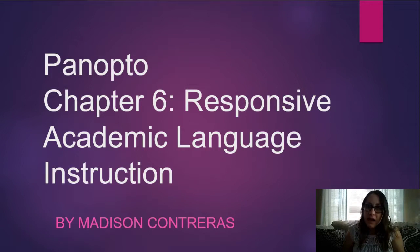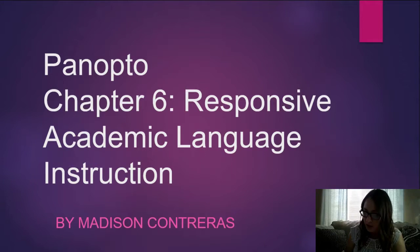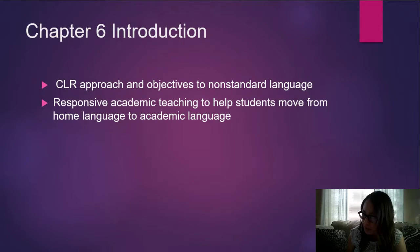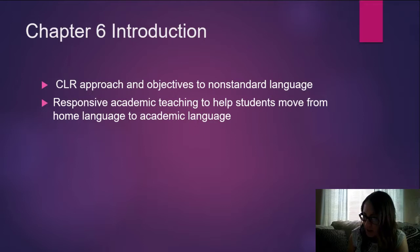Hey everyone, it's Madison from your diversity class. For my Panopto, I'm doing chapter six. The title of chapter six is Responsive Academic Language Instruction, and this chapter is found in our book on pages 113 through 135. The main takeaway from this chapter is following the CLR approach and methods toward a non-standard language, having a belief system that supports different languages, and adapting to a responsive academic teaching routine to help students move from home language to academic language.